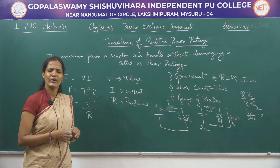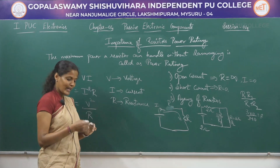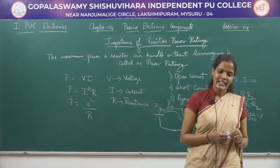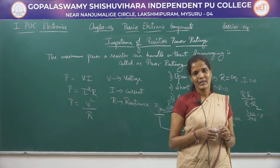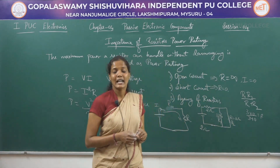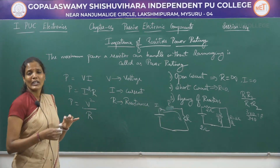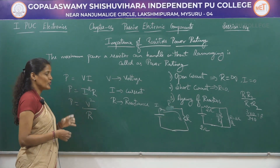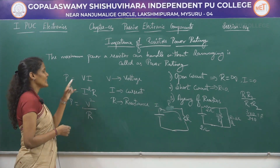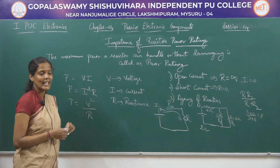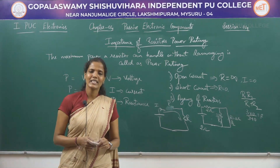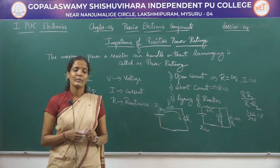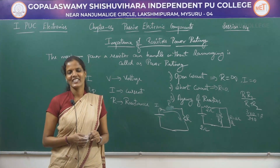Power rating plays a very important role in resistors. The maximum power which can be handled by a resistor without getting damaged is called power rating, and it is specified for each resistor. We must ensure the current does not cross that maximum limit. To calculate the power handling of any resistor, use any of these three formulas: V × I, I² × R, or V² / R, where V is voltage, I is current, and R is resistance. In my next session I will cover color coding of resistors and we will solve some problems on color coding. Until then, take care, bye bye.